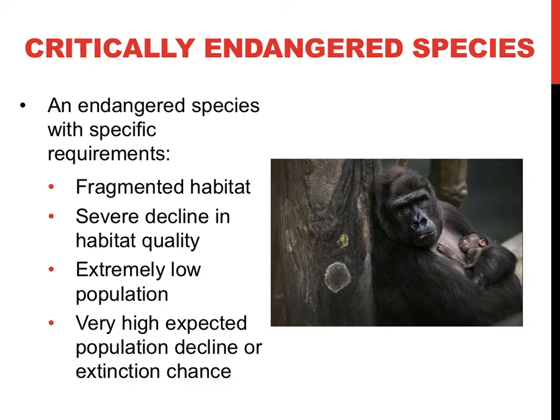Critically endangered species are threatened species with an exceptionally high risk of extinction. Not only do they meet the requirements for endangered species, but they fulfill additional criteria exhibited on this slide. One of the additional requirements is possessing a fragmented habitat, defined as a species having a total range of less than 100 square kilometers that is either broken into very small separated regions or confined to one specific geographic area. If organisms are unable to interbreed because they are separated, that is a big problem, and if something were to happen to that one specific location, it could lead to a quick extinction.